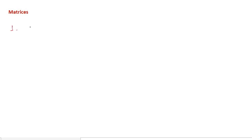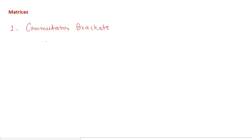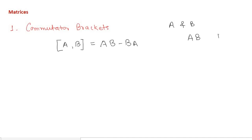Let me rewrite the commutator relation. In commutator brackets, we have seen that there are two types of commutator relations. If I write a matrix [A, B] in this square bracket notation, it is AB minus BA. The product of matrix A and B, and the product of B and A, are not equal in general — matrix multiplication is non-commutative.